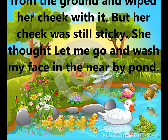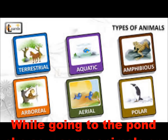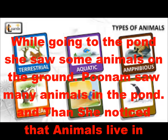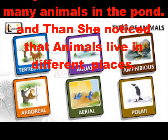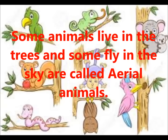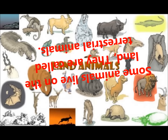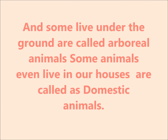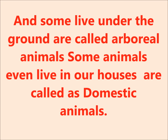She thought, 'Let me go and wash my face in the nearby pond.' While going to the pond, she saw some animals on the ground. Poonam saw many animals in the pond also. Then she noticed that animals live in different places — some in trees, some in water, some on land, some under the ground, some fly in the sky, and some even live in our houses.